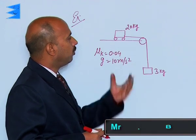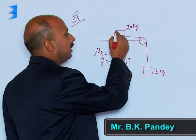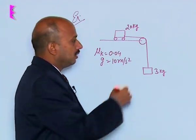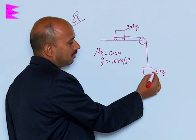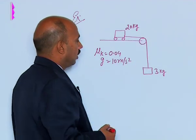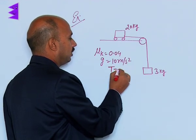Now, see in this question, this is the system over here. A trolley is of mass 20 kg here connected with a string and another end of the string is connected to the mass 3 kg. So we have to calculate tension in the string here.